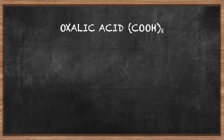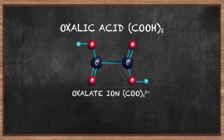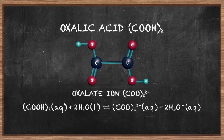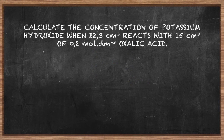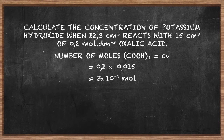One last calculation to check that you know how to solve these types of problems. Oxalic acid has the formula (COOH)₂. Its chemical structure is shown in the diagram. Oxalic acid is a diprotic acid — it can donate two protons to form its oxalate ion, COO²⁻ (2 negative). Its ionisation equation shows us that two hydronium ions are formed when it dissolves in water. Now let's calculate the concentration of potassium hydroxide when 22.3 cm³ of potassium hydroxide reacts with 15 cm³ of 0.2 mol per decimetre cubed oxalic acid. In step 1, we calculate the number of moles of the known substance — in this case, the number of moles of oxalic acid.